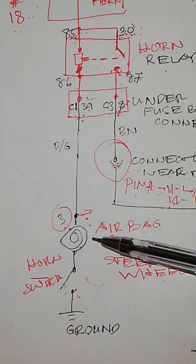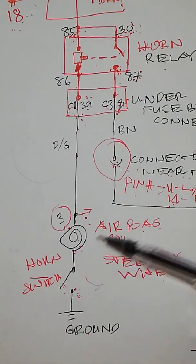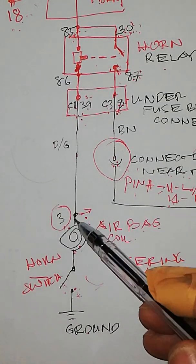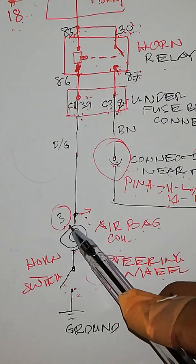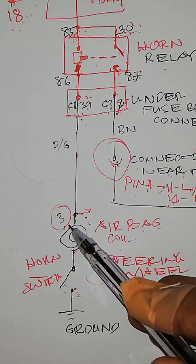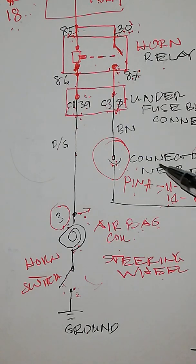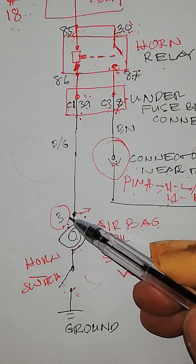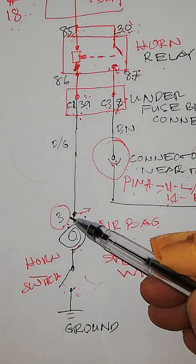Before that, remove the steering wheel or the steering column cover. Locate the connector of the airbag coil. In the steering column area, you can find number three pin.